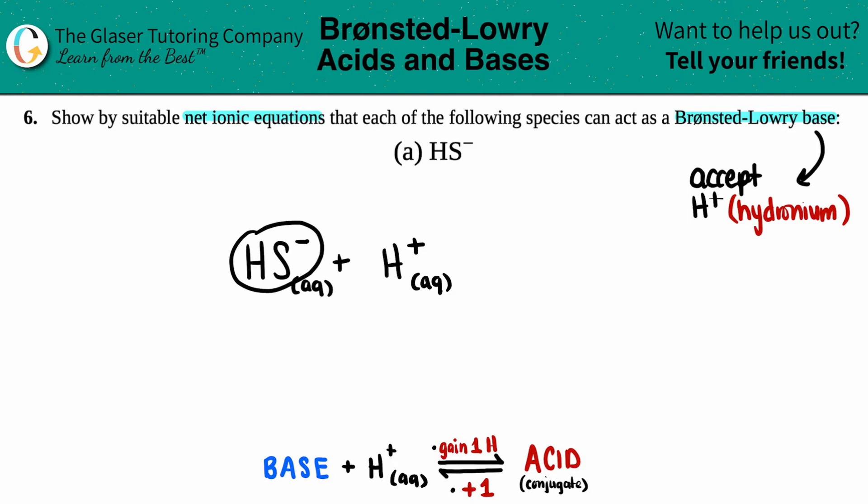Now, since HS minus is not on our list of six strong bases, we know that this solution is going to be in equilibrium. We've done tons of problems last chapter, chapter 13, dealing with equilibrium. But I would just memorize your six strong bases because they're going to come up big this chapter, I promise.